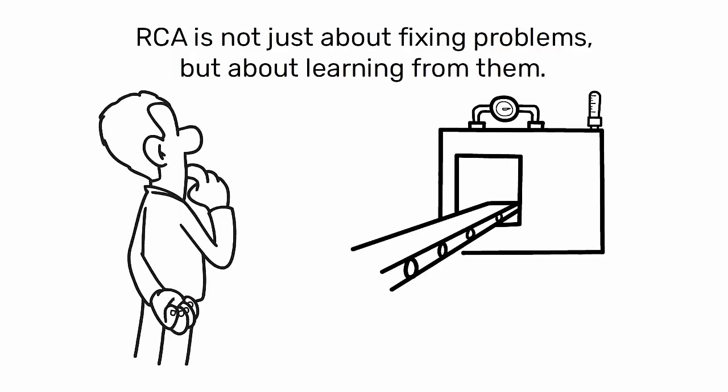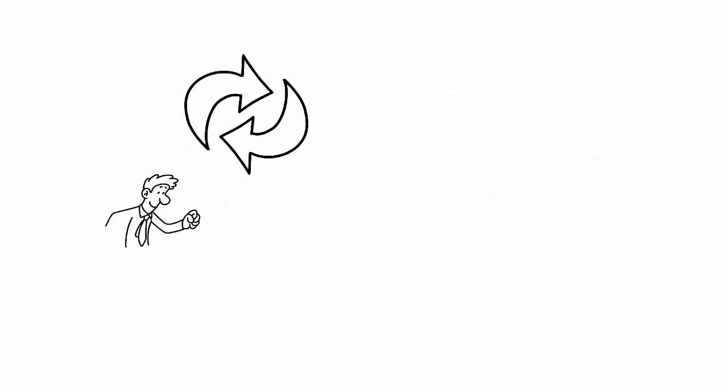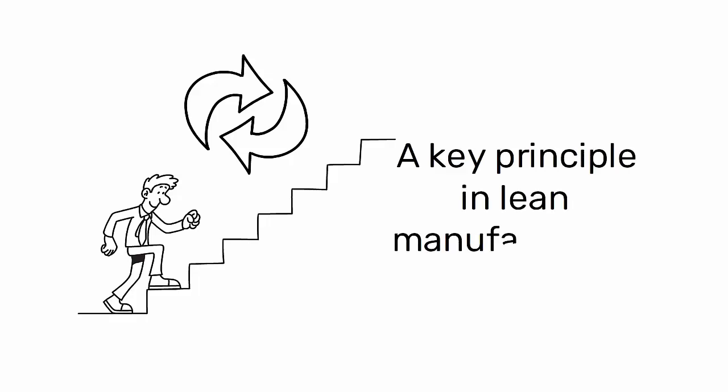RCA is not just about fixing problems, but about learning from them. It provides valuable insights into how systems work and how they can be improved. It encourages a culture of continuous improvement, a key principle in lean manufacturing.